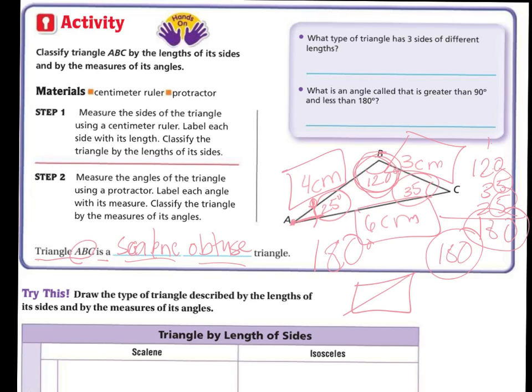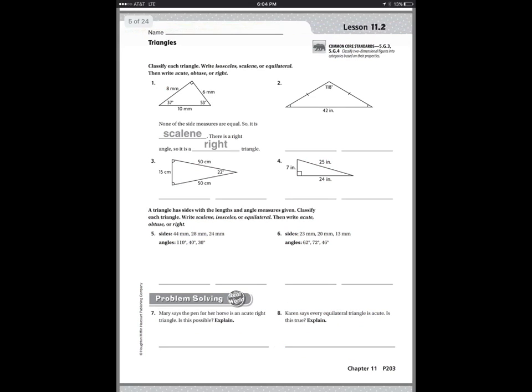So there's a scalene obtuse triangle because what type of triangle has three different lengths? That's going to be scalene. And then what is the angle called that is greater than 90 but less than 180? That is obtuse.